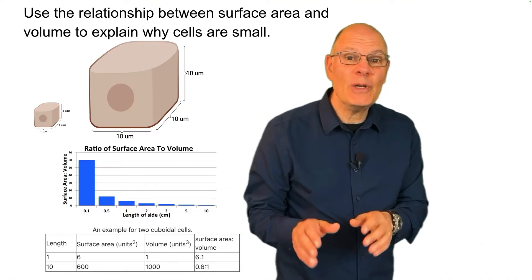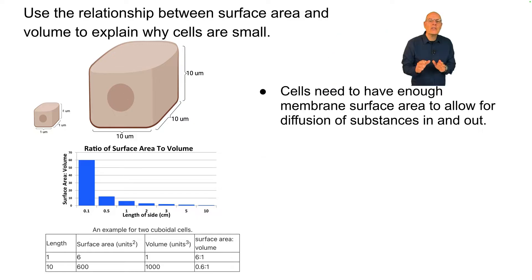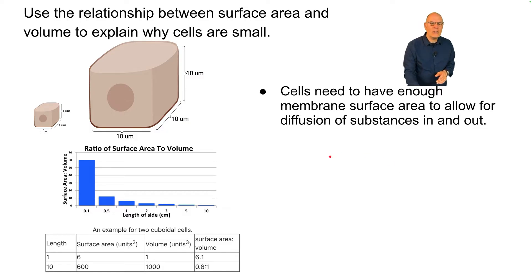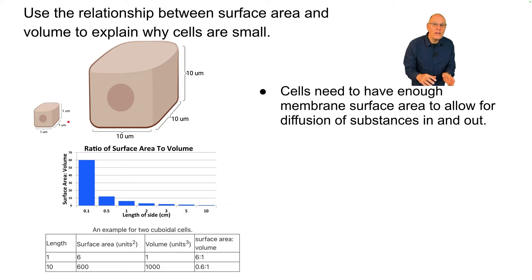Use the relationship between surface area and volume to explain why cells are small. Cells need to have enough membrane surface area to allow for diffusion of substances and molecules in and out. Everything that gets into a cell gets there through the membrane, and it might be counterintuitive, but a small cell has much more surface area relative to its volume than a large cell does.